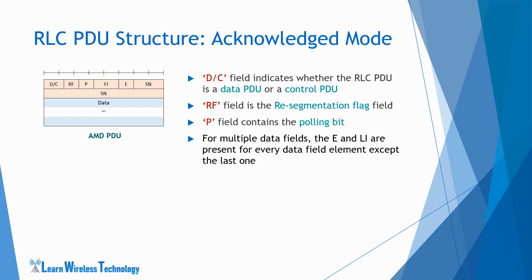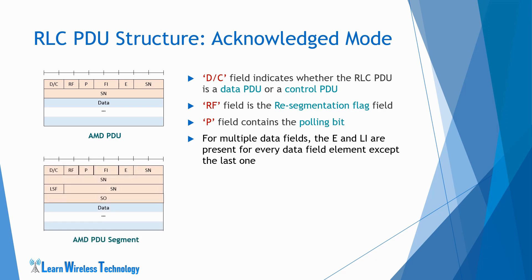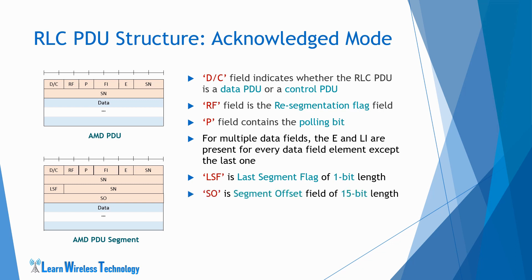When a retransmission of a PDU is requested and the PDU may not fit within the size indicated by the lower layer during that retransmission opportunity, the PDU goes through resegmentation. These resegmented PDUs have a certain structure, known as the AMD PDU segment. The header has some additional fields compared to the normal Acknowledged Mode PDU. The LSF field, i.e. last segment flag, is of 1 bit length and indicates whether the last byte of the AMD PDU segment corresponds to the last byte of the AMD PDU. The SO field, i.e. segment offset, is of 15 bit length, which indicates the position of the AMD PDU segment within the original AMD PDU. The remaining fields in the AMD PDU segment are the same as the original AMD PDU.